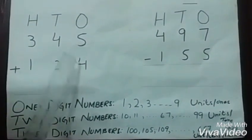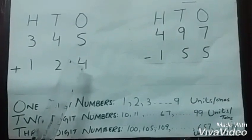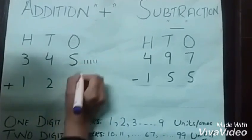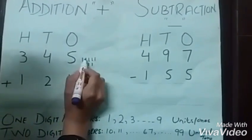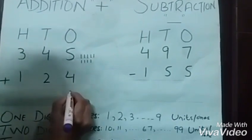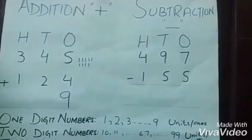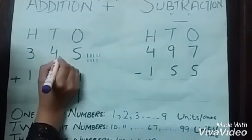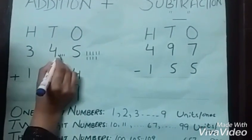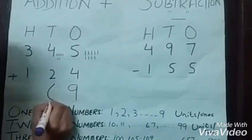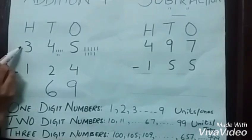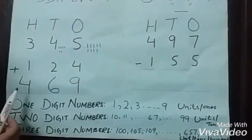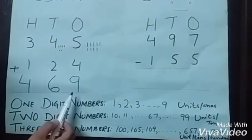In ones, we have five ones in 345 and in 124 we have four ones. Adding five and four ones, we get nine ones. Now adding four tens and two tens, we get six tens. Now adding three hundreds and one hundred, we get four hundred. This means we get the number 469, consisting of nine ones or units, six tens, and four hundreds.